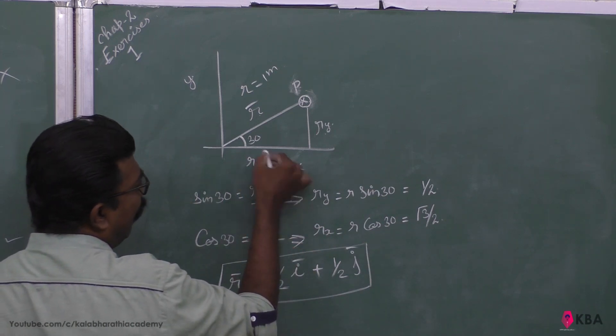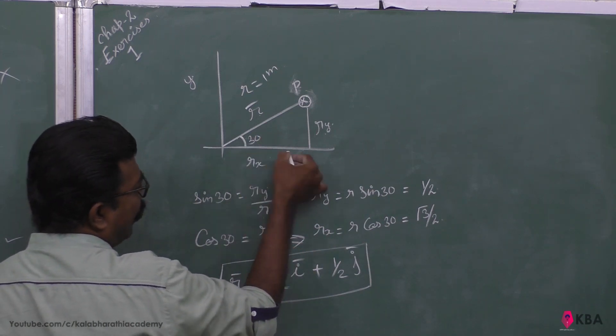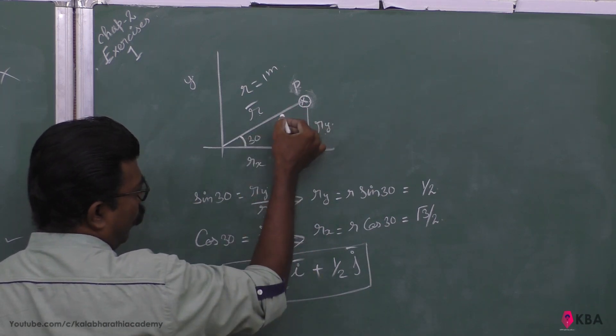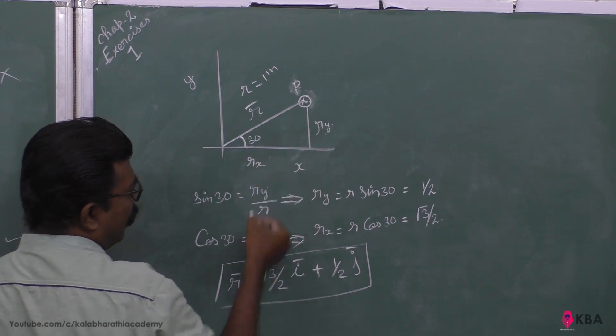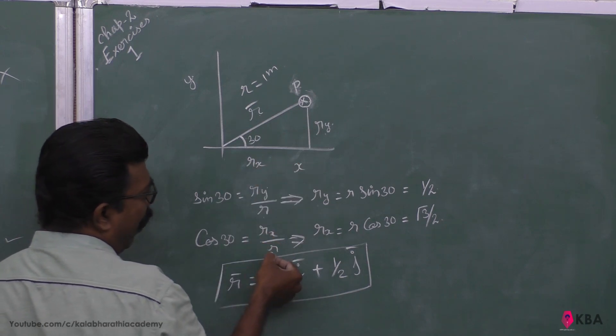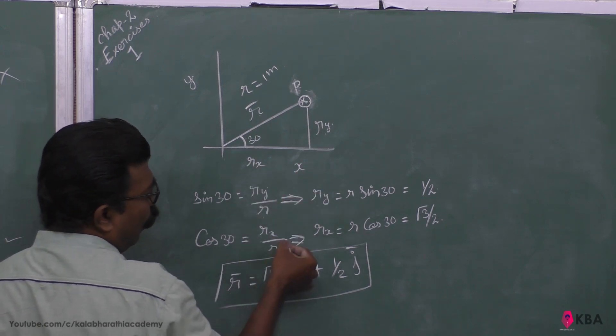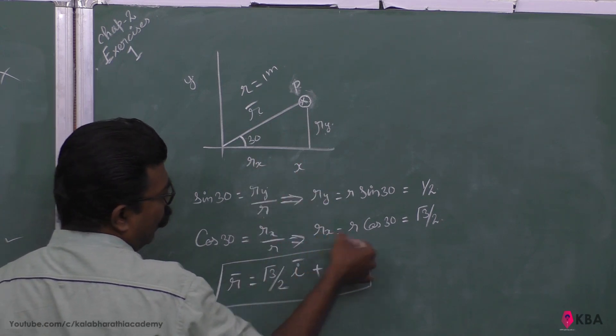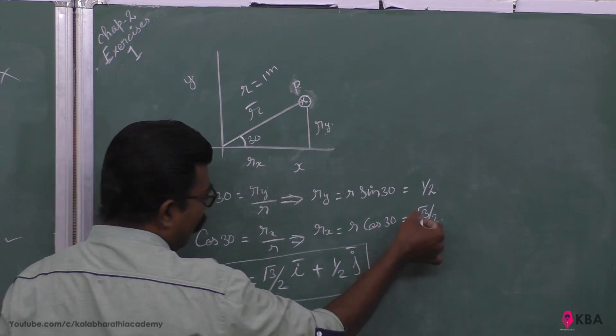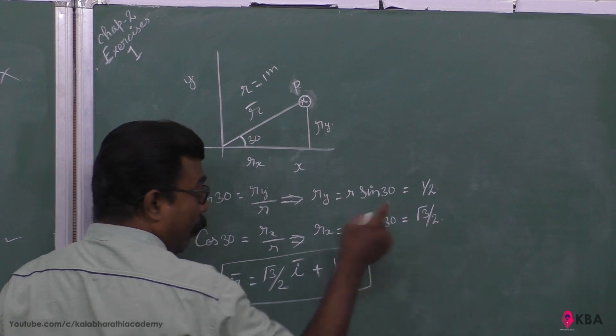cos30 is adjacent side by hypotenuse, so that is Rx divided by R. Therefore Rx is equal to R·cos30, which gives root 3 by 2.